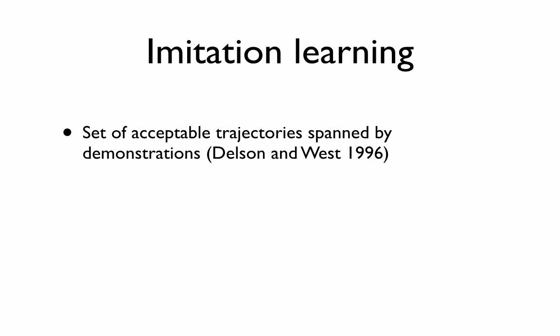There has been a lot of research in imitation learning. Starting with Delson and West from 1996, a set of demonstrated trajectories spans a space of acceptable trajectories. Demonstrations are in the form of trajectories through space, and this approach defines acceptable reproductions as any trajectory that goes in the space spanned by them. This approach relies on demonstrations being produced in the task space of the robot, thereby avoiding the correspondence problem — the need to map what a teacher is doing onto one's own body.